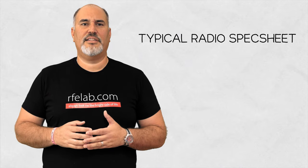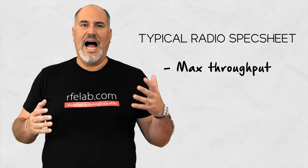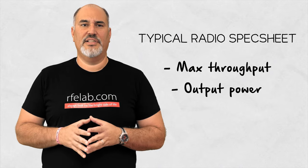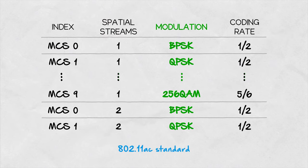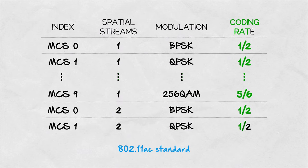Radio manufacturers often list their highest achievable throughputs, output power, receipt sensitivities, and MCS rates in their spec sheets. Besides modulation techniques, the MCS rate includes information about number of spatial streams and coding rate.